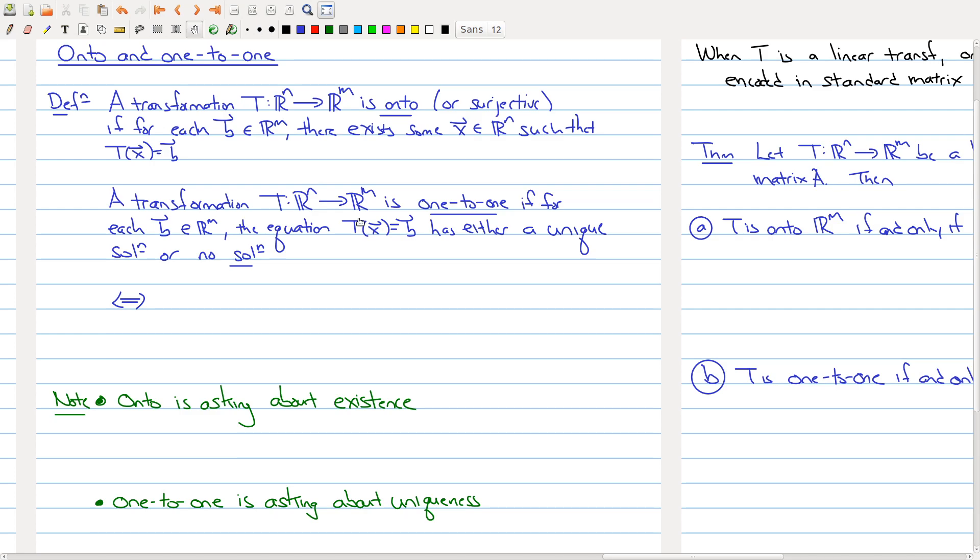Welcome to the last part of Lecture 9. In this last part, what we want to do is look at what are some of the properties that a transformation can have, namely onto and one-to-one.